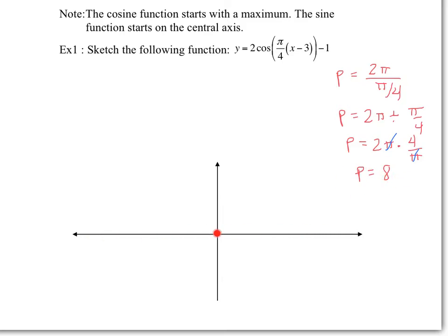The central axis is at negative 1, so I'll sketch that dotted line. The amplitude is 2, so we're going to go 2 above the central axis and 2 below the central axis. Two below gives us a minimum at negative 3, and 2 above gives us a maximum at 1.